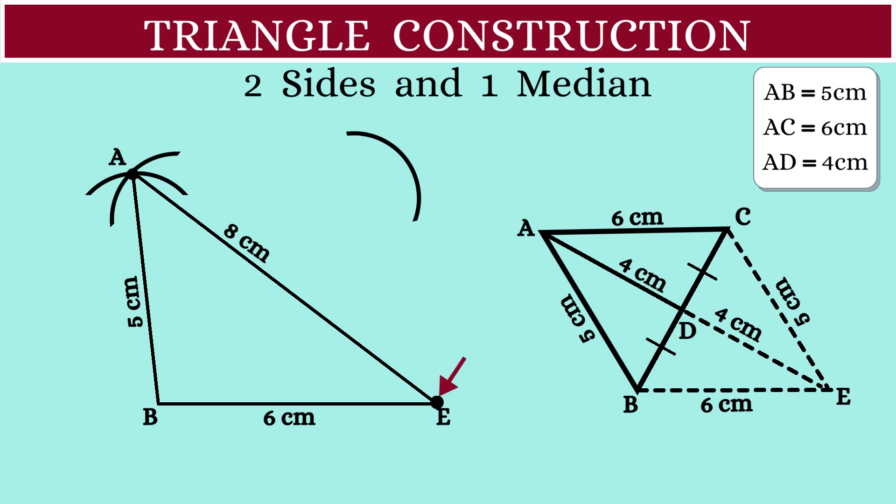Then, with E as the center and a radius of 5 cm, draw another arc that cuts the previously drawn arc at point C. Let's join AC, BC, and EC.